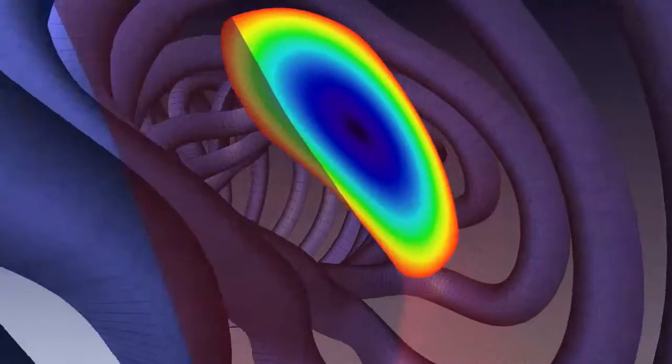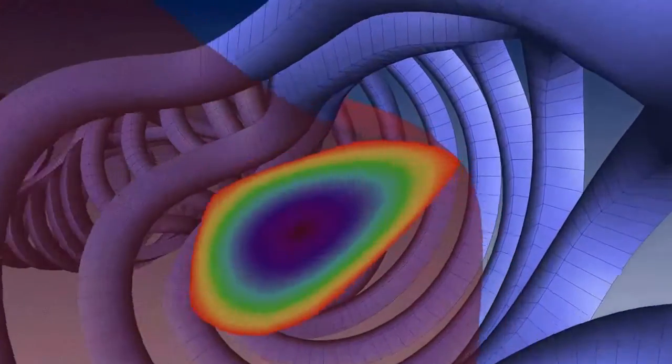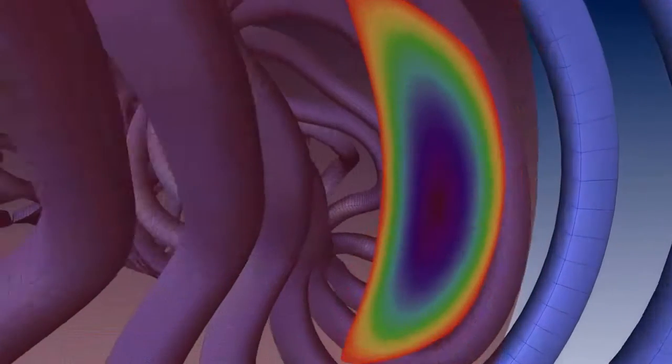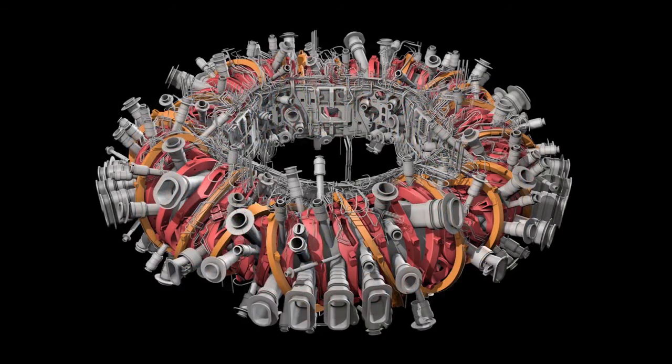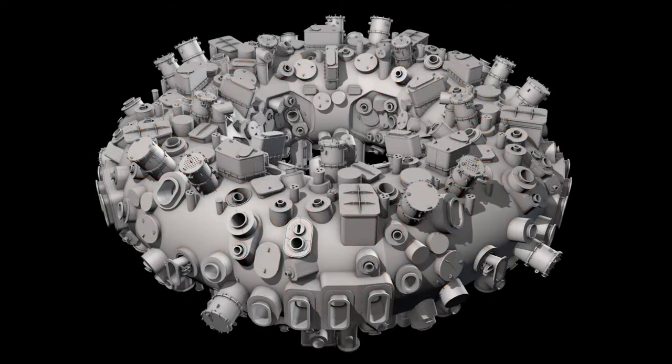If Wendelstein 7X can show it holds onto gas as well as a tokamak, then stellarators may step into the limelight. Building this complex machine has taken 19 years, but researchers hope, when they turn it on, that it will recreate a little bit of the sun.